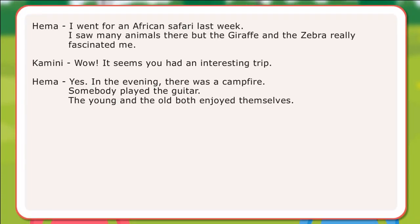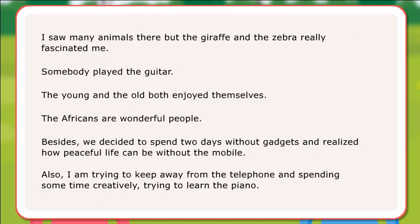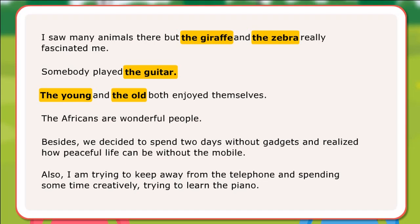In the dialogues, Hema and Kamini have used 'the' with giraffe, zebra, guitar, piano, mobile, telephone, and Africans, and also with some adjectives like young and old, even though here 'the' is not used for a particular person or object. Here are examples: I saw many animals there but the giraffe and the zebra really fascinated me. Somebody played the guitar. The young and the old both enjoyed themselves. The Africans are wonderful people. We realized how peaceful life can be without the mobile. I am trying to keep away from the telephone and trying to learn the piano.